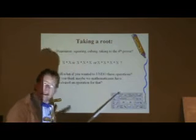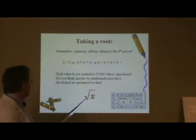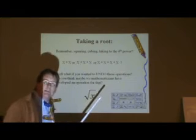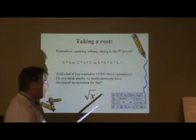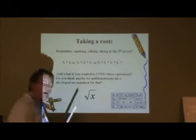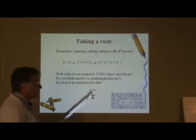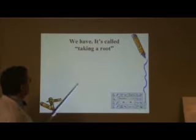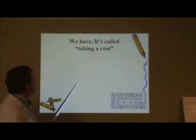If I take the square root, I use a little symbol like this. And what I'm asking is, what number was multiplied by itself that came up with this number that's now under the radical sign? It's also called a radical sign or a root sign. And this is called taking the root.